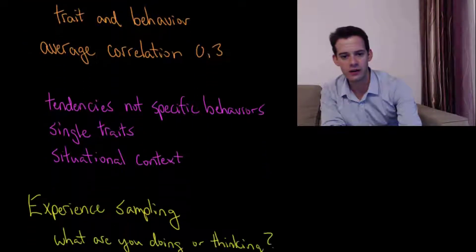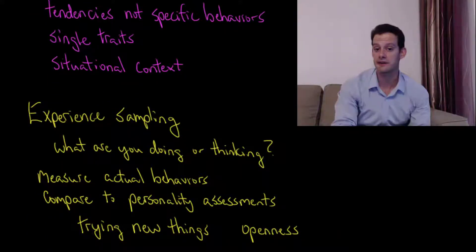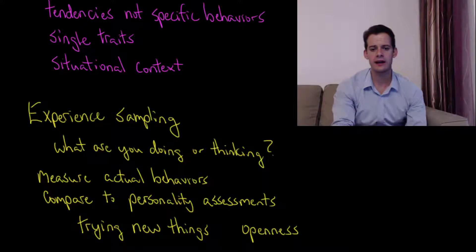So some other ways that we can look at this relationship between traits and behaviors. One way is what's called experience sampling. And so what we do here is we randomly buzz a participant. Initially this was done with pagers, but now it's done with smartphone apps. And the participant simply records what they're doing or what they're thinking about. So at a certain time during the day that they don't know, it's going to suddenly buzz and say, hey, what are you doing?